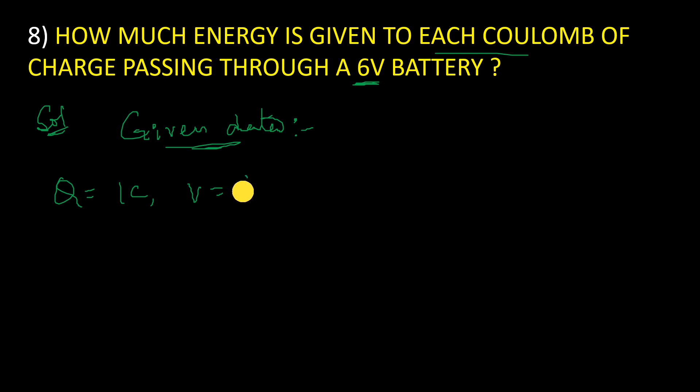So the potential difference is given 6V. So what they are asking to find out? How much energy? That is nothing but work. So we need to find, with these 3 physical quantities, take the relation and relate this 3. So what is the formula?